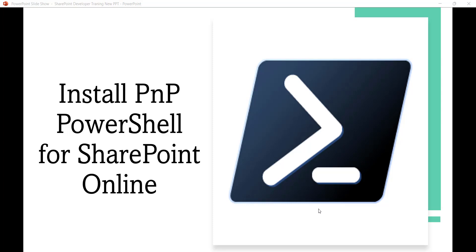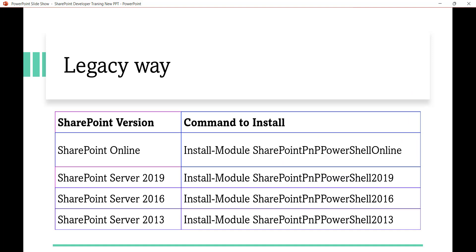Here is an update video on how we can install PNP PowerShell for SharePoint Online. We will see what module we will use to work with SharePoint Online sites. Previously I recorded a video explaining how to install SharePoint PNP PowerShell Online and work with SharePoint Online sites. That is a legacy way of doing it. For SharePoint Server 2019, 2016, or 2013, the corresponding commands are still available. There is no update on the on-premises version — the only update is on the SharePoint Online version.